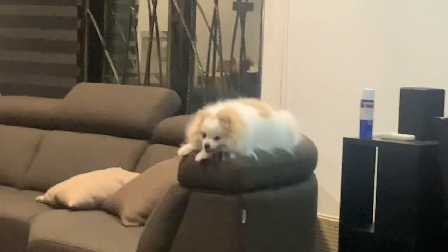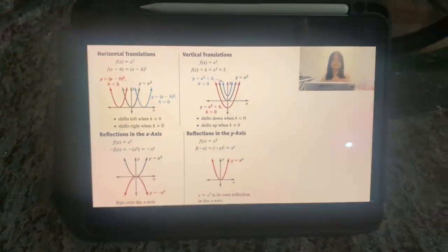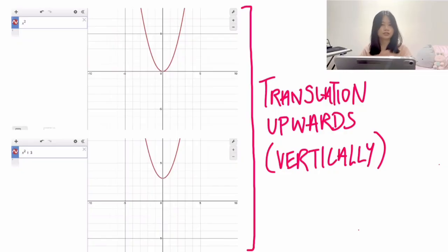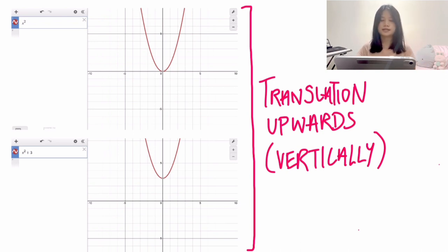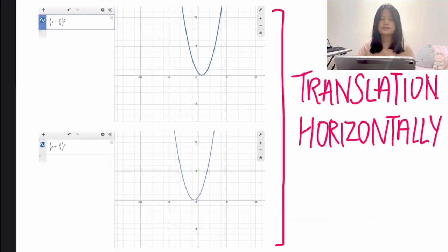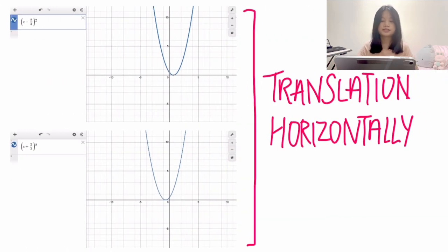Now we're going to talk about quadratic functions. This is an example of vertical translation — as you can see, it translates upwards by 3 units when you add 3 to the original function x squared. This next example shows horizontal translation.